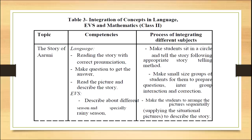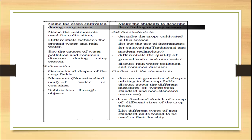To develop these EVS competencies, activities include making students arrange pictures sequentially about various seasons, supplying situational pictures to describe the story, and asking students to describe their feelings in the rainy season. Students can describe crops cultivated in various seasons, list the use of instruments for cultivation including traditional tools and modern technologies, differentiate the quality of ground water and rain water, and discuss rain water pollution and common diseases caused by this pollution.